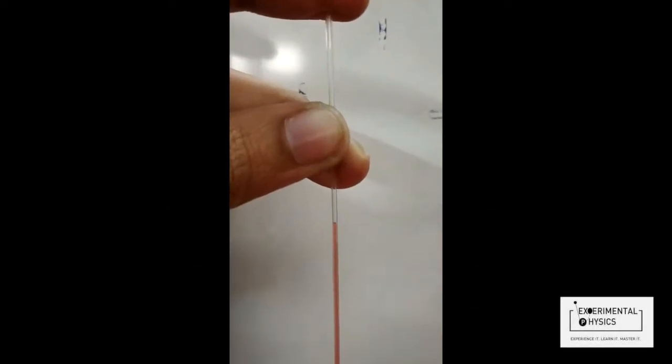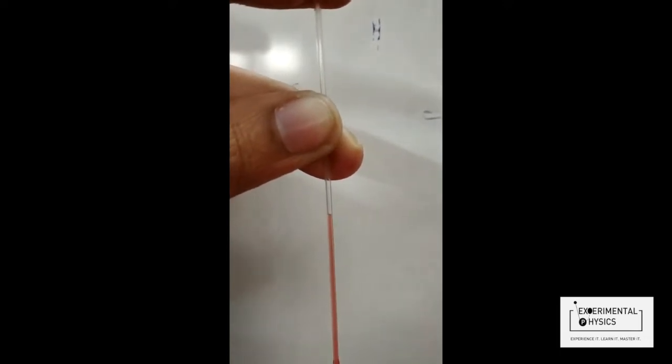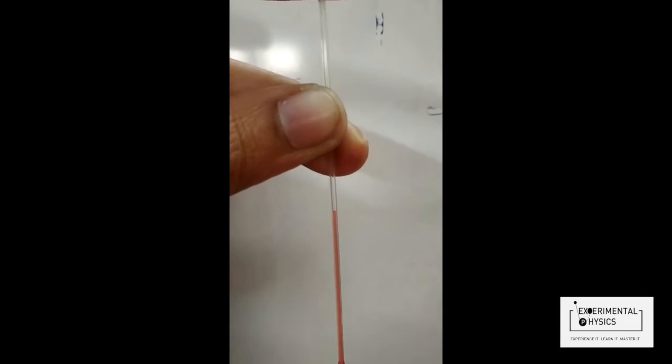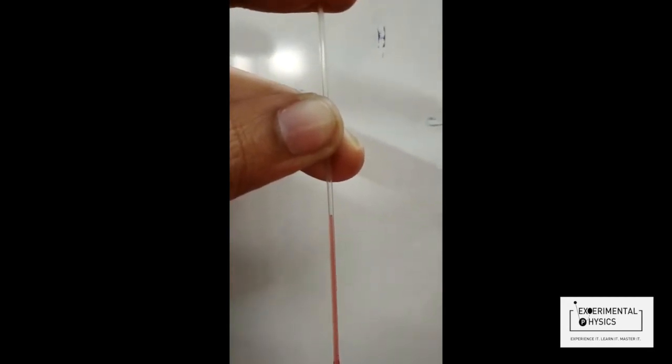This is a close-up shot. I want all of you to see the shape of the meniscus, the water column and its surface. You can see that the surface of the water in the capillary is curved. It is concave upwards. This is very, very important for our next part.